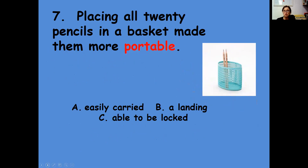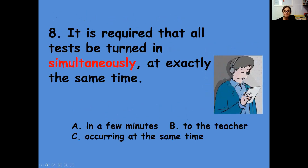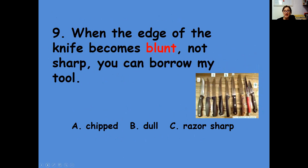Number seven: placing all 20 pencils in a basket made them more portable. If you put something into a basket it makes it more portable — does that mean more easily carried, a landing, or able to be locked? Number eight: it's required that all tests be turned in simultaneously — at exactly the same time. So 'simultaneously' means occurring in a few minutes to the teacher, or occurring at the same time? Number nine: when the edge of the knife becomes blunt — not sharp — you can borrow my tool. So 'blunt' must mean not sharp; is it chipped, dull, or razor sharp?